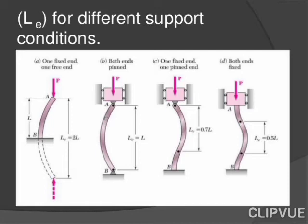Effective length values: When one end is fixed and the other end is free, Le = 2L. When both ends are pinned, Le = L. When one end is pinned and the other end is fixed, Le = 0.7L. When both ends are fixed, Le = 0.5L.